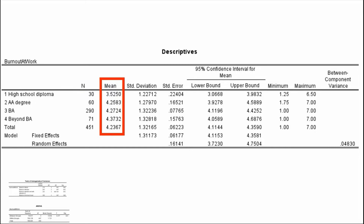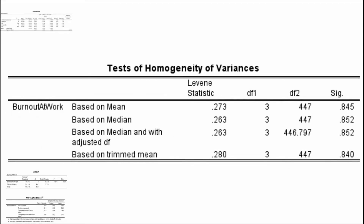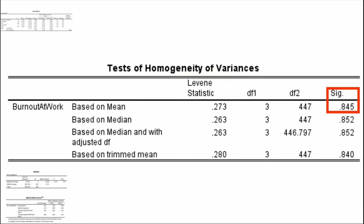The Homogeneity of Variances table is important. It gives us Levene's statistic, which examines whether the variances in the scores of the dependent variable are the same for each of the four education groups. Levene's test is essentially a test of the null hypothesis that the variances in burnout scores are the same for all education groups. If the p-value is less than 0.05, then there are significant differences in variability between the four groups and we reject the null. But the p-value here is 0.845, which is clearly greater than 0.05, so we cannot reject the null — the group variances are equal in the population. So far so good.